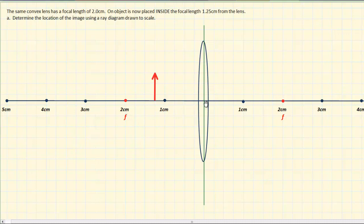We're using the same scaling. Every four squares represents 1 centimeter on my graph paper. Now this time, our object is placed inside the focal point, so between our focal point and the lens is where the object goes.